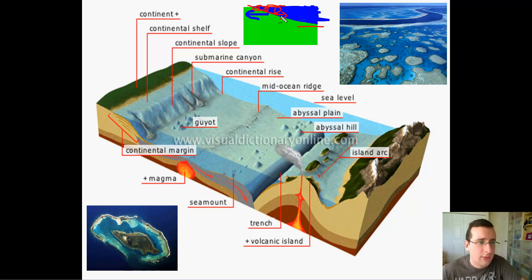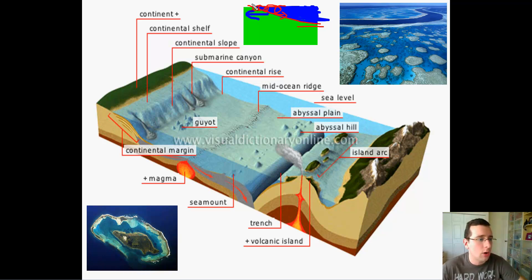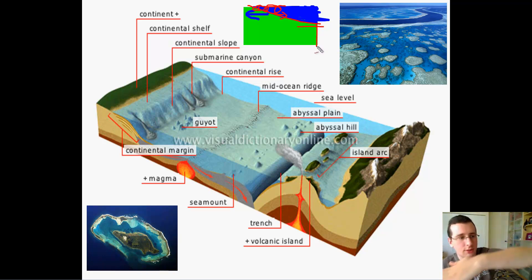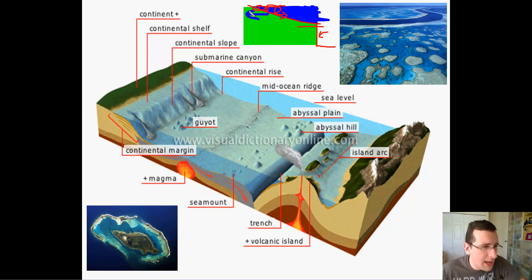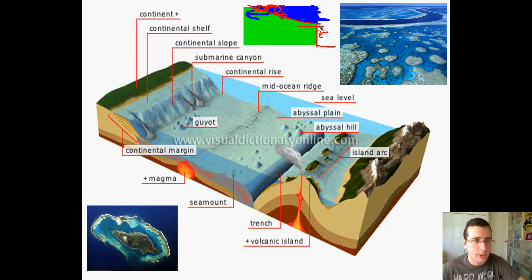Eventually, when you reach the point where waves no longer act, you get a sudden drop-off where the shelf goes all the way down to the bottom of the ocean — that's called the continental slope. The continental shelf is the steady incline, and the continental slope is the sudden deep dip at the end of the shelf.